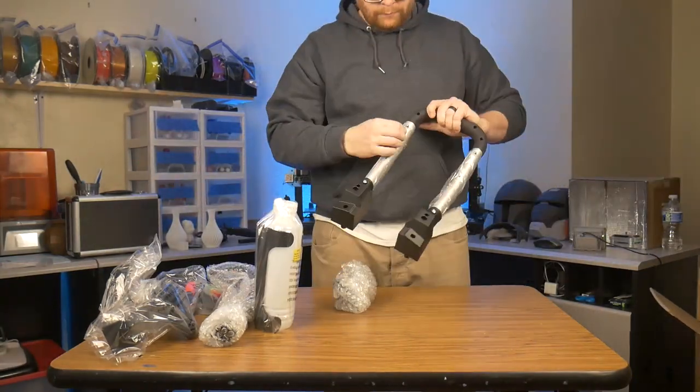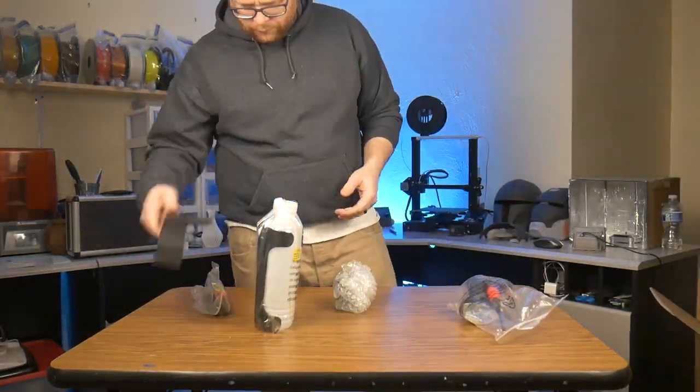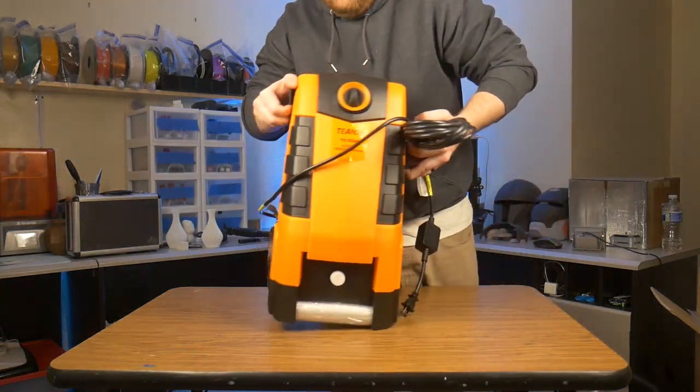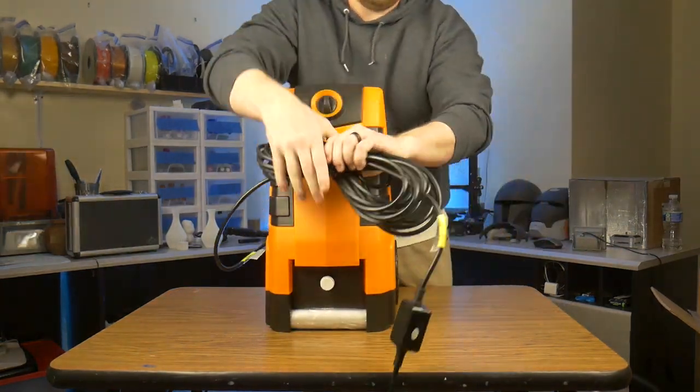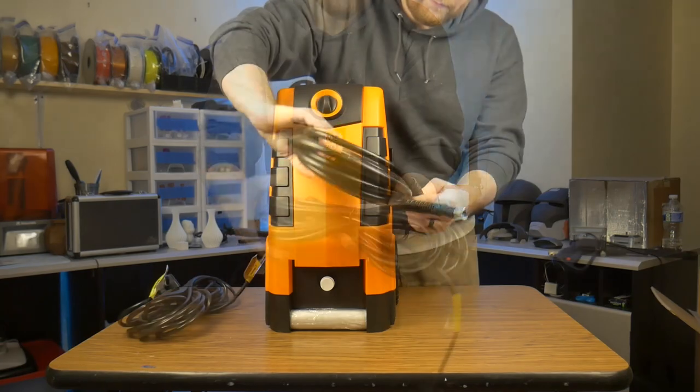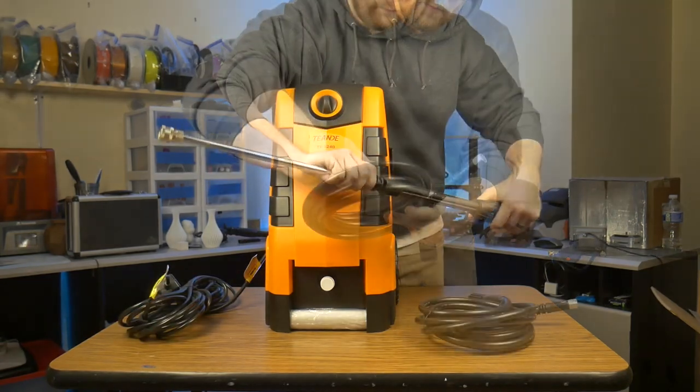After getting everything out of its protective plastic bags, here are all the parts I ended up with. The main pressure washer unit with GFI protected power plug, a pressure hose, and the pressure wand.